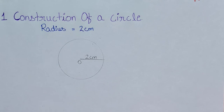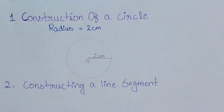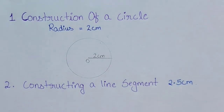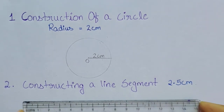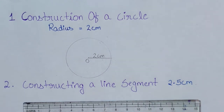The next topic is line segment. Suppose we have to construct a line segment of length 2.5 centimeters. The first step while constructing a line segment with the help of a compass is to draw a line of any length, since a line has no fixed measurement.